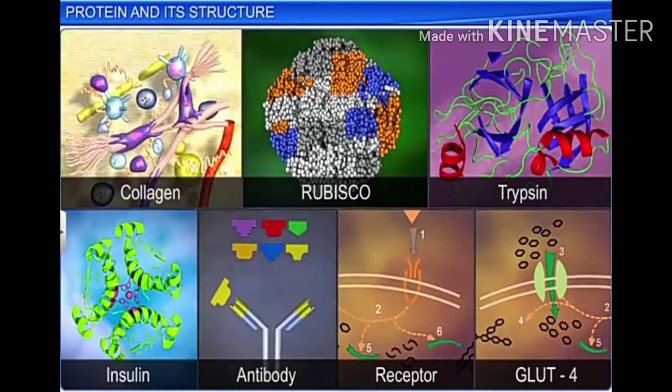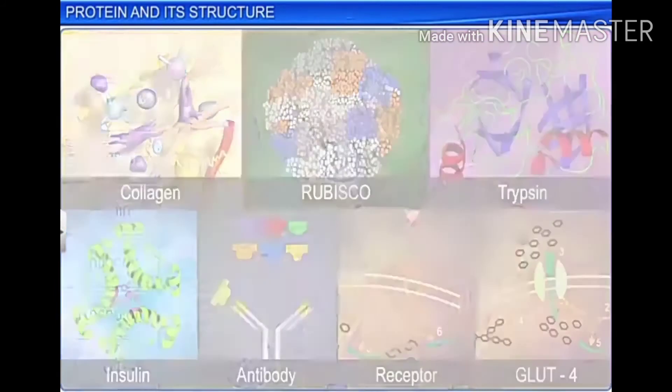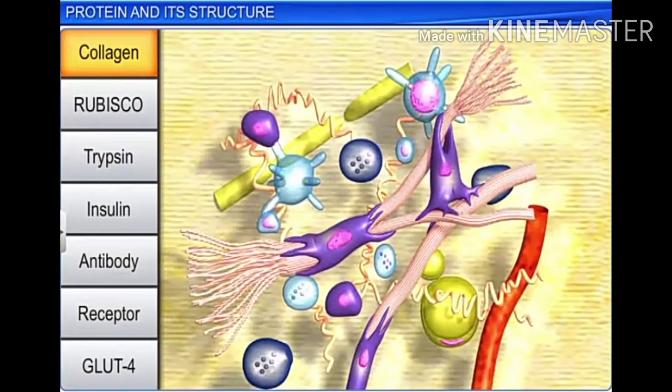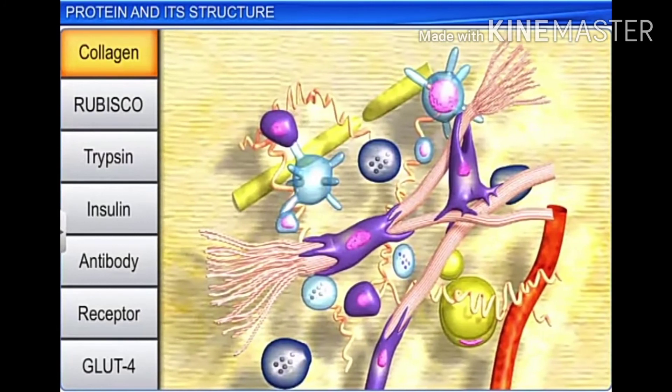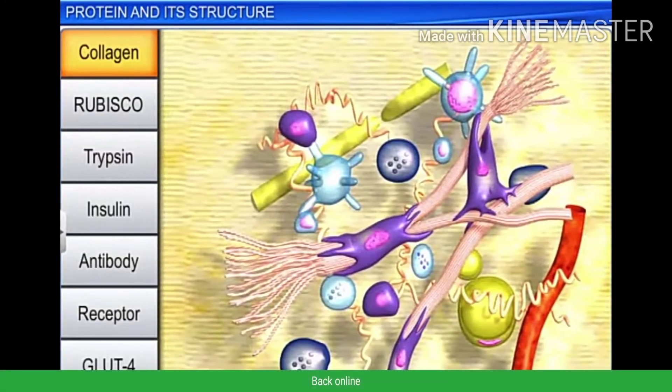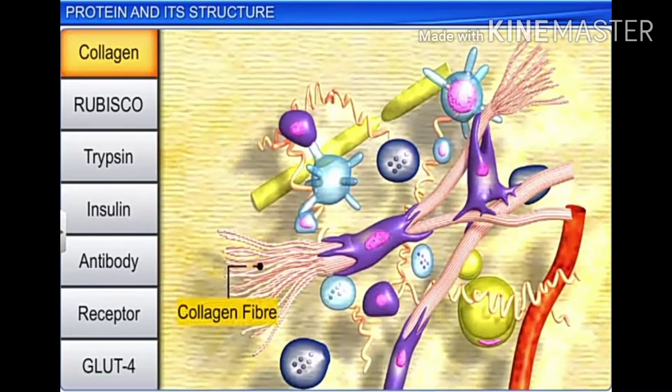Collagen is the most commonly occurring protein in the animal world. Collagen fiber is generally found in connective tissues and acts as an intercellular ground substance in the space between the cells.